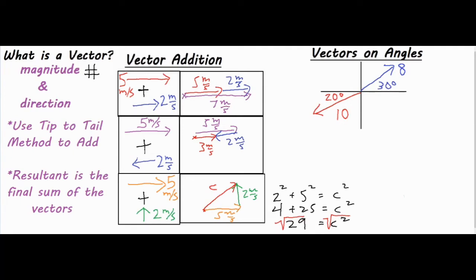A more complex version used in math or physics involves angled components — combining angled vectors with straight vertical or horizontal components. I'm going to show you how to break down both of these angled vectors and combine them to get a final solution for how long the vector is and which direction it's pointing.